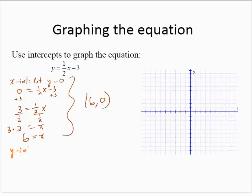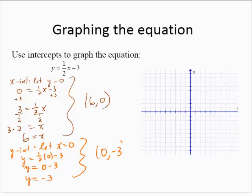For the y-intercept, letting x equal 0: y equals one-half of 0 minus 3, which is 0 minus 3, which is negative 3. So the y-intercept is 0, negative 3. Plotting the points 6, 0 and 0, negative 3, and drawing the line through the points. And there we are.